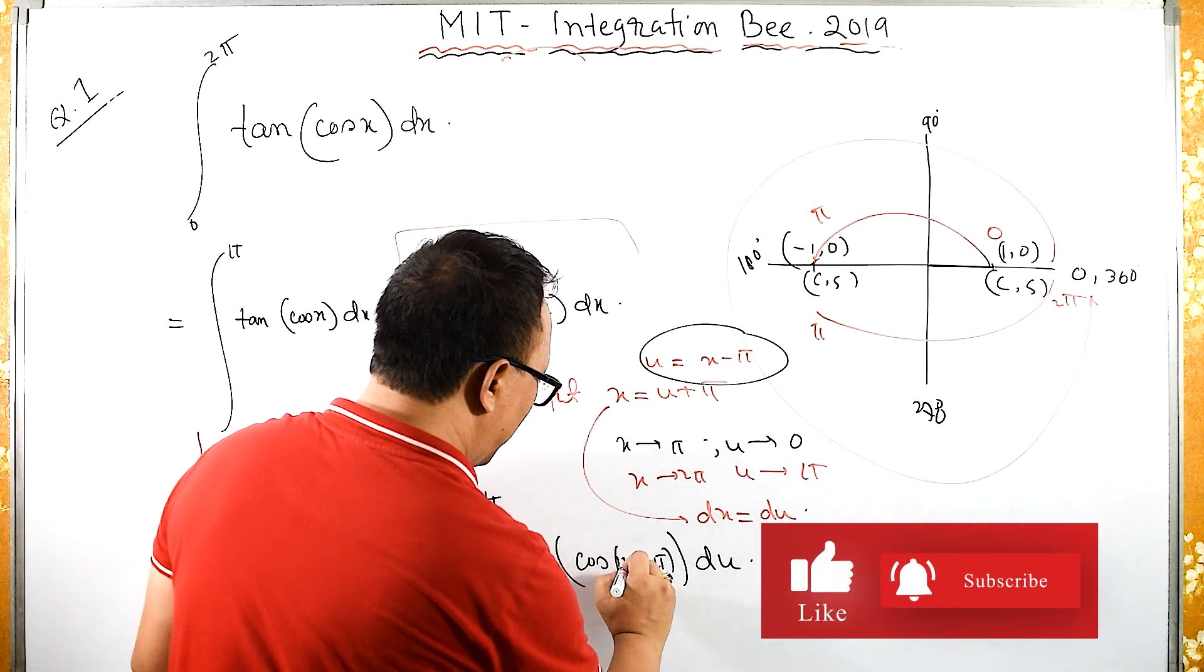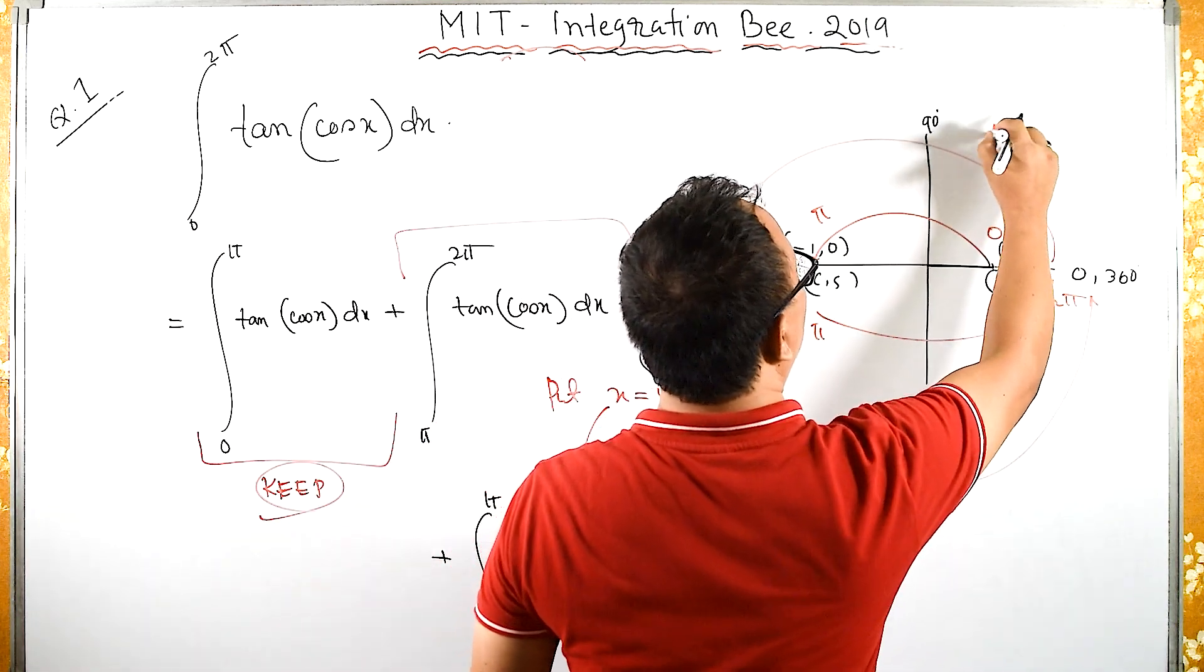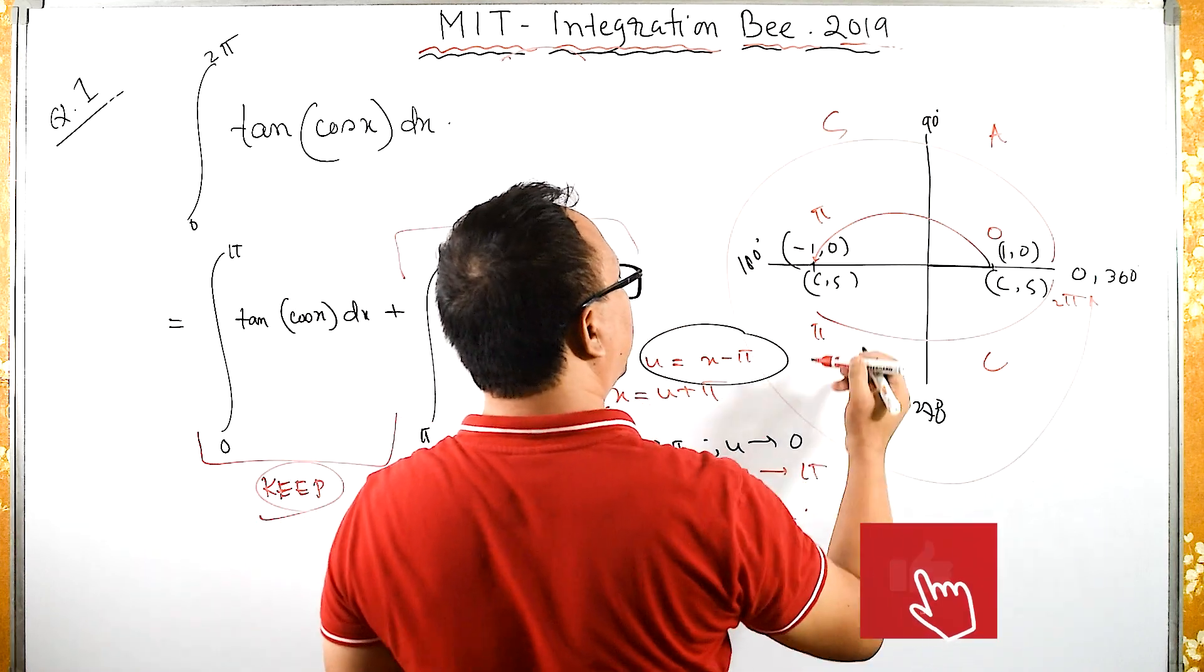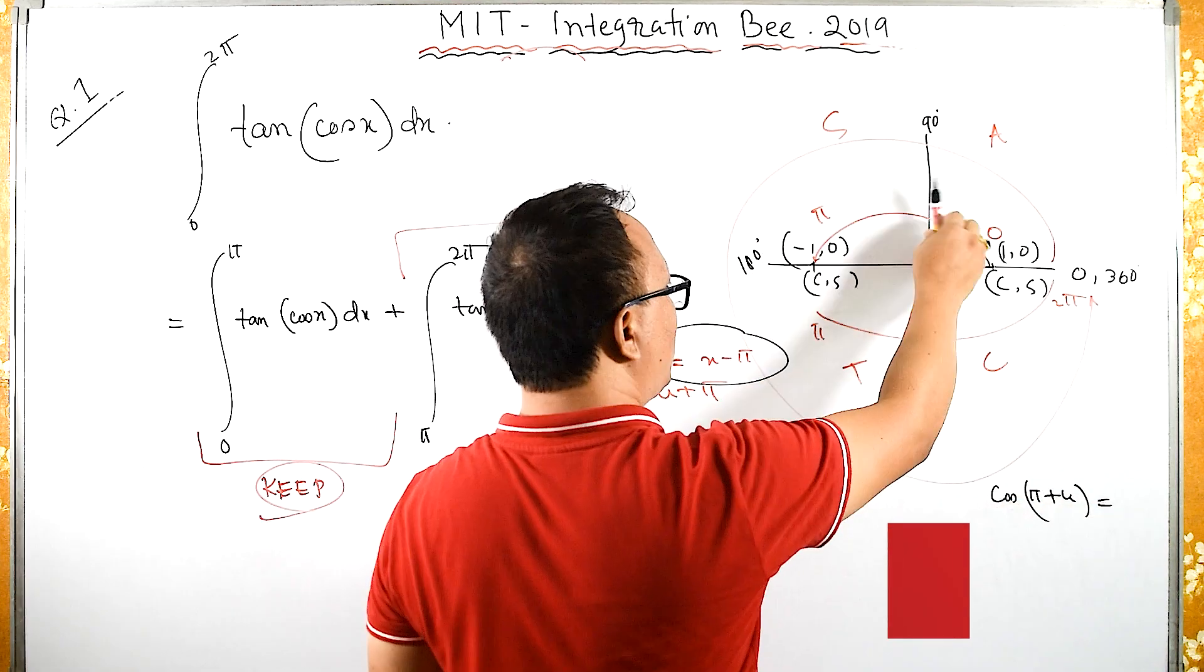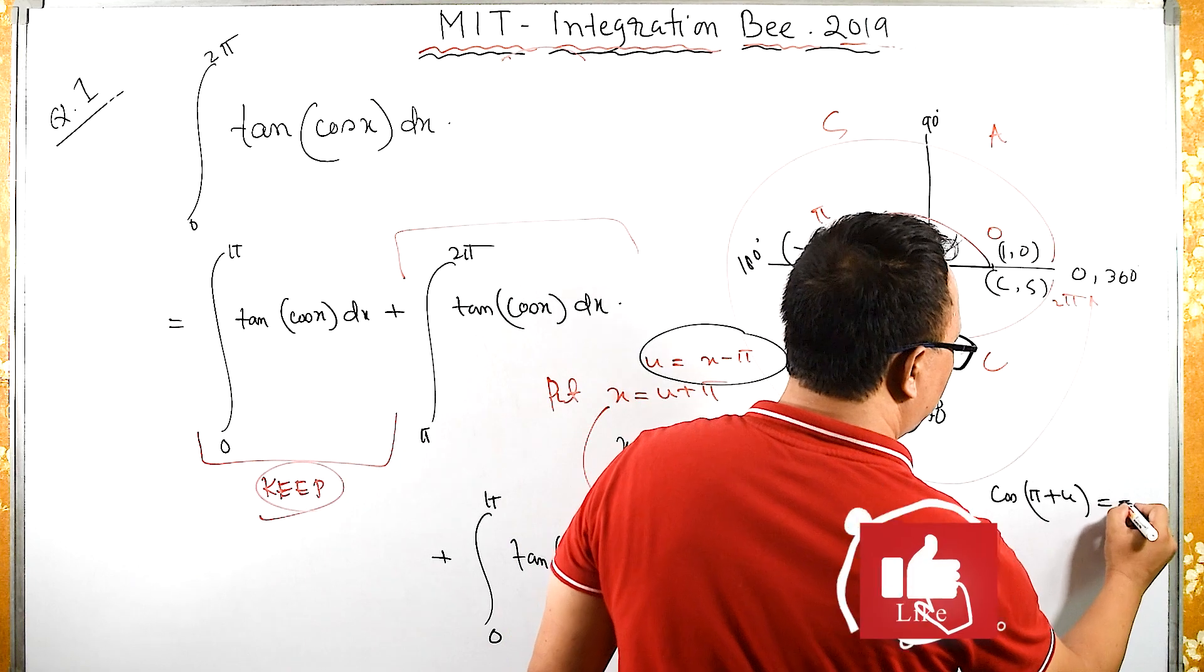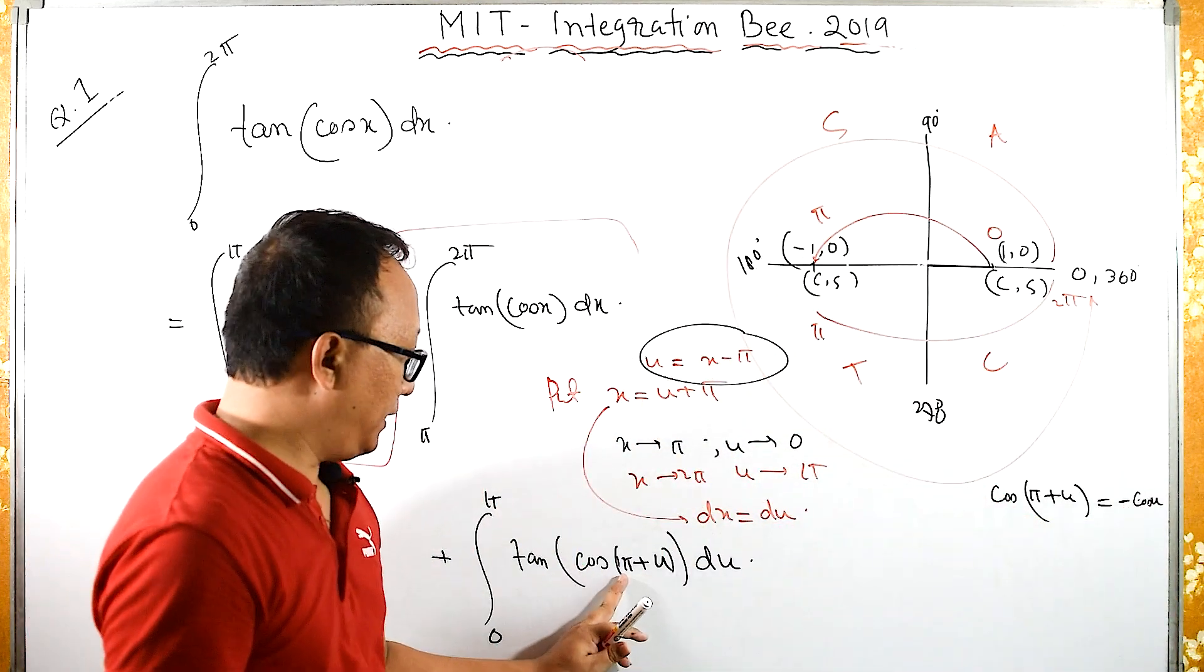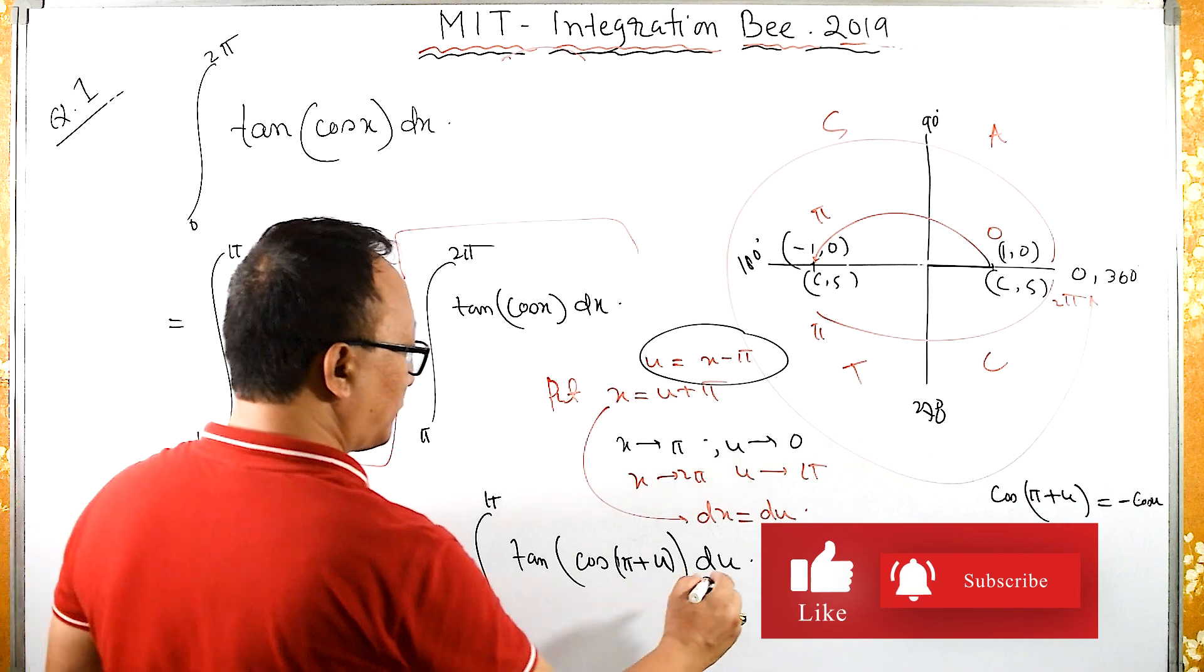We have the ASTC rule: All, Sine, Tan, Cos. What is cos(π + u)? π plus u means in this quadrant. In this quadrant, tan is positive, therefore cos will be negative. Since it is a multiple of π, cos will go to cos, therefore we get -cos(u).